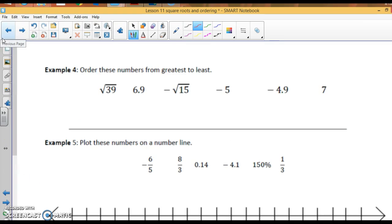Order these numbers from least to greatest. I'm going to use our estimate. The square root of 36 is 6. So, this is the square root of 39. That's going to be a little bit more than 6. I'm going to say like 6.2, approximately. Maybe 6.3. The square root of 15. The square root of 16 is 4. So, it's going to be a little less than that. So, it's going to be negative 3.9. That's an estimate.